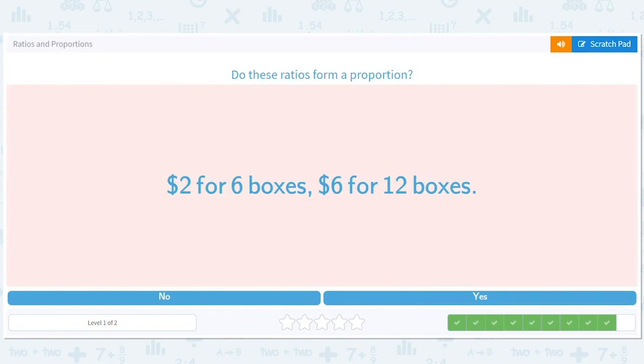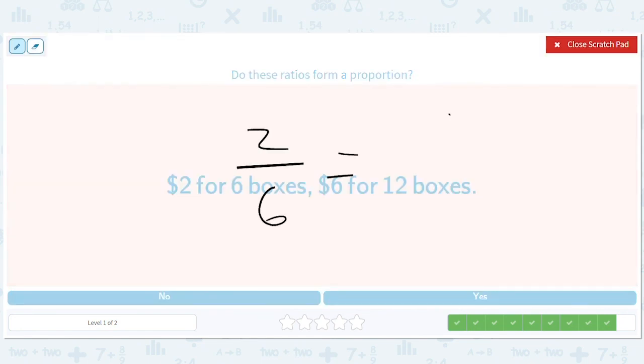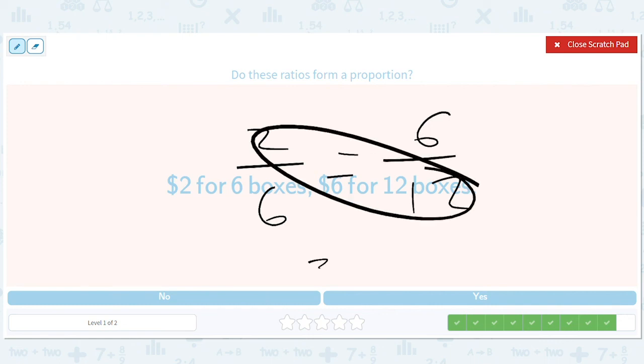And two out of six equals six out of 12. That's 24, that's 36. Those don't equal.